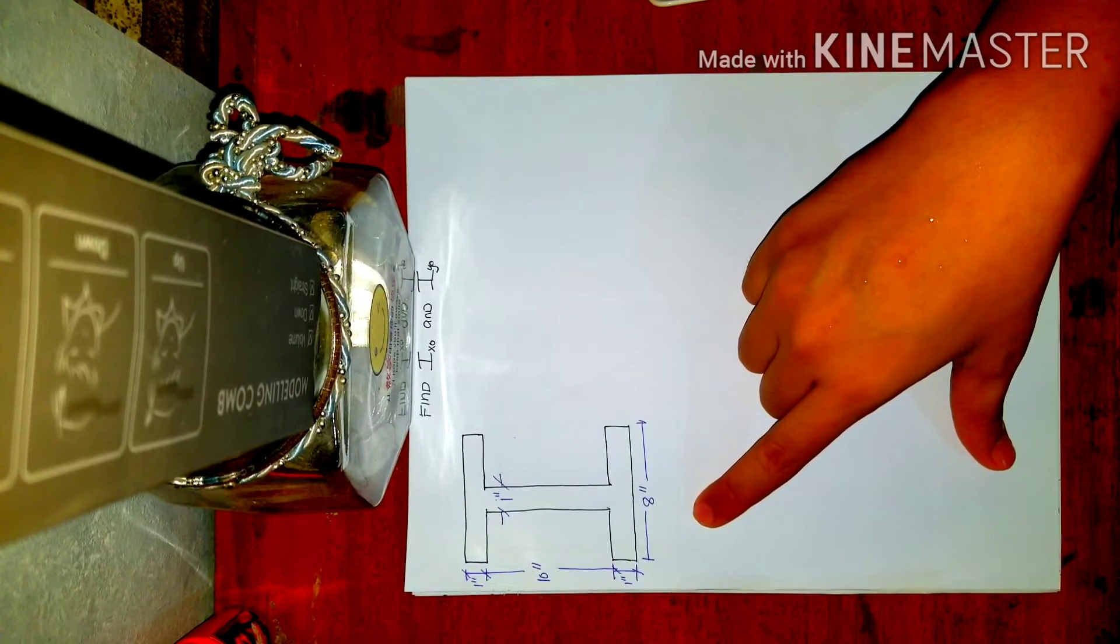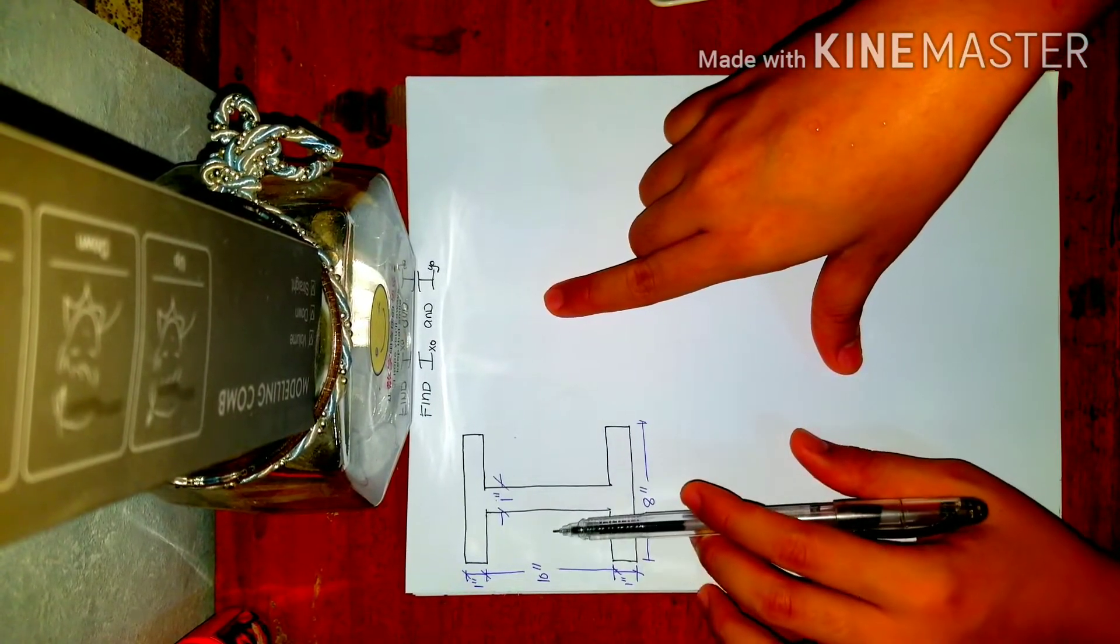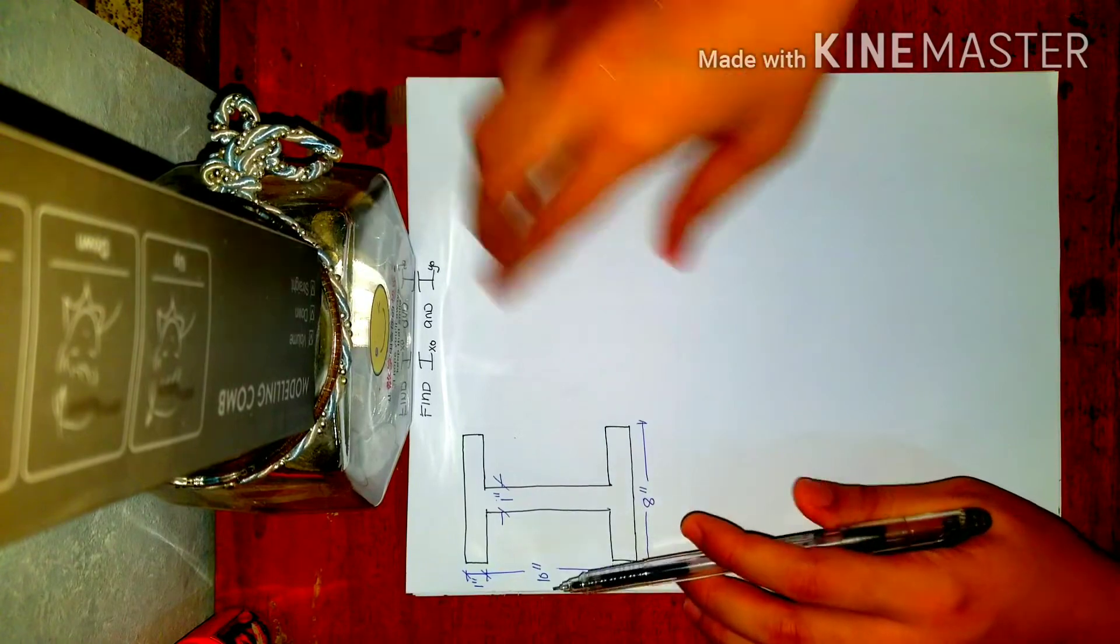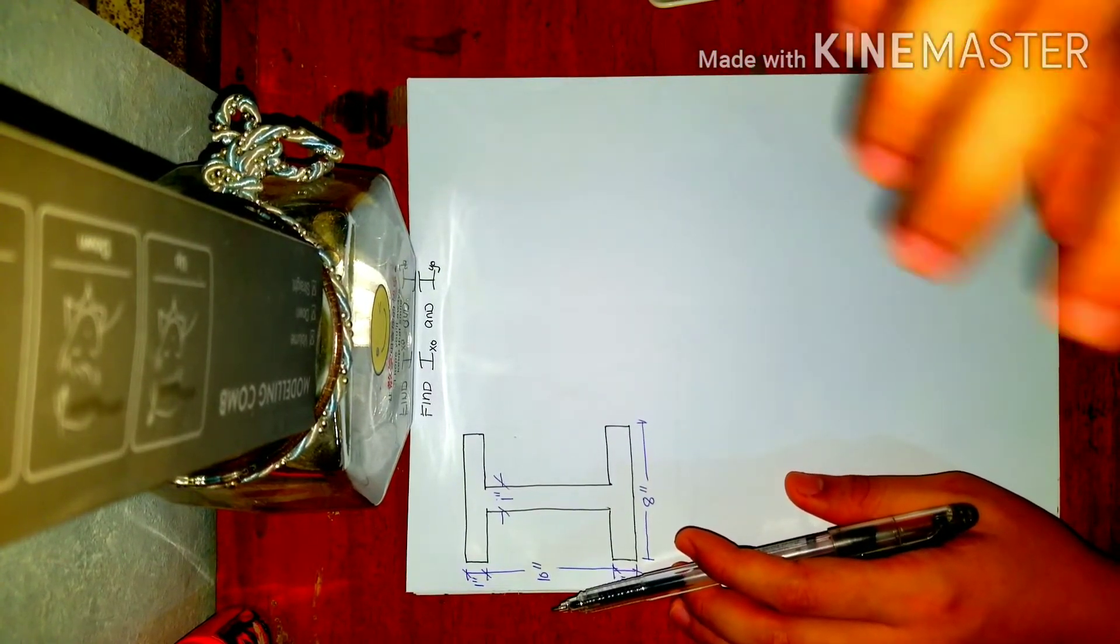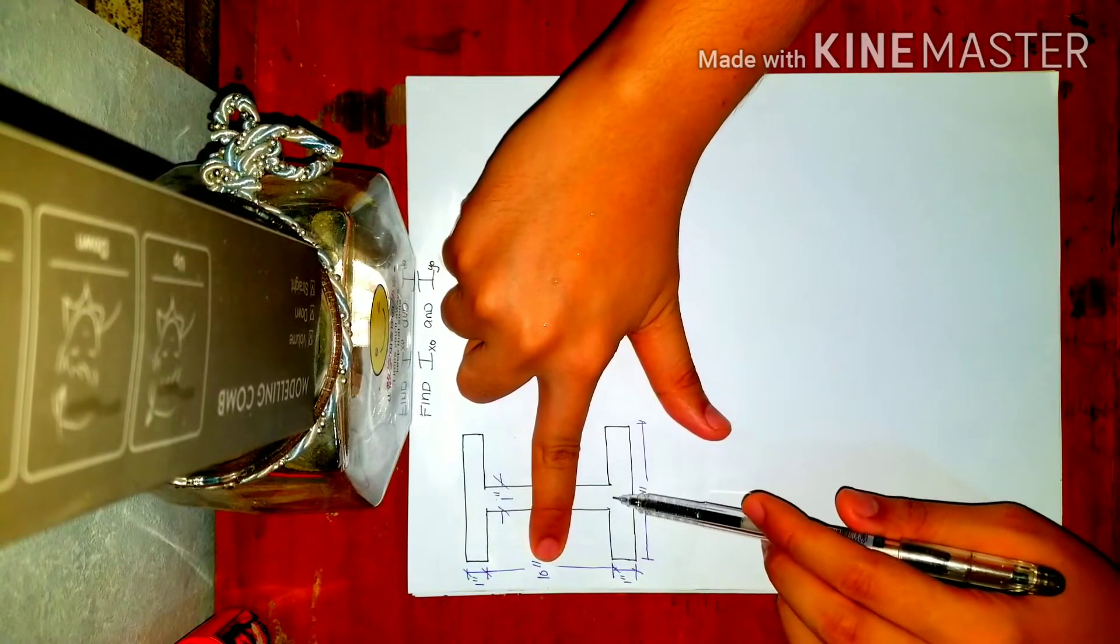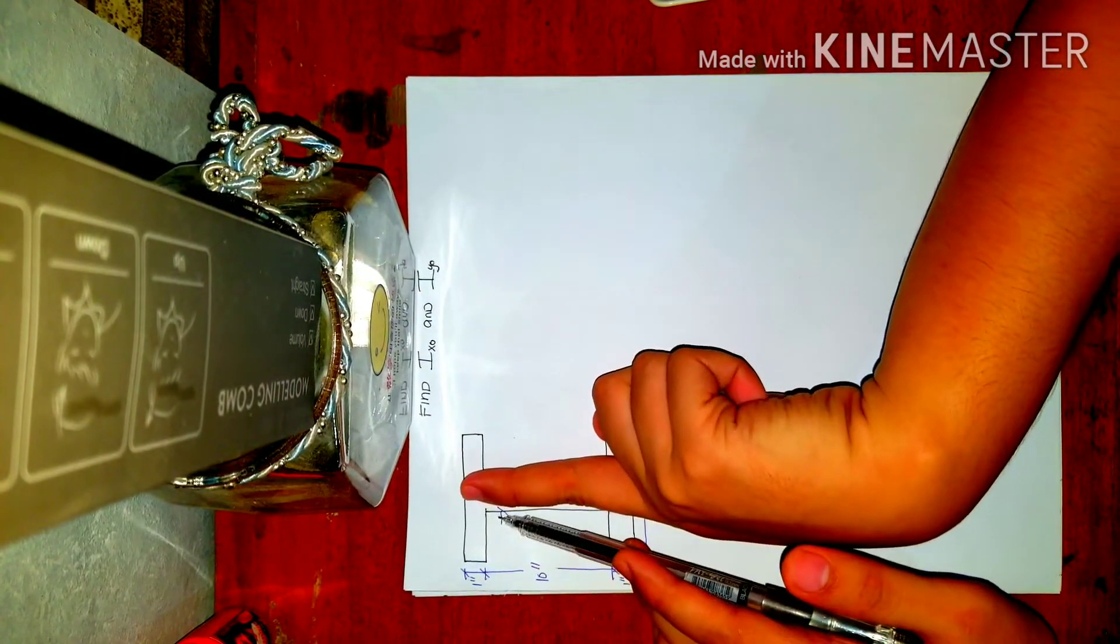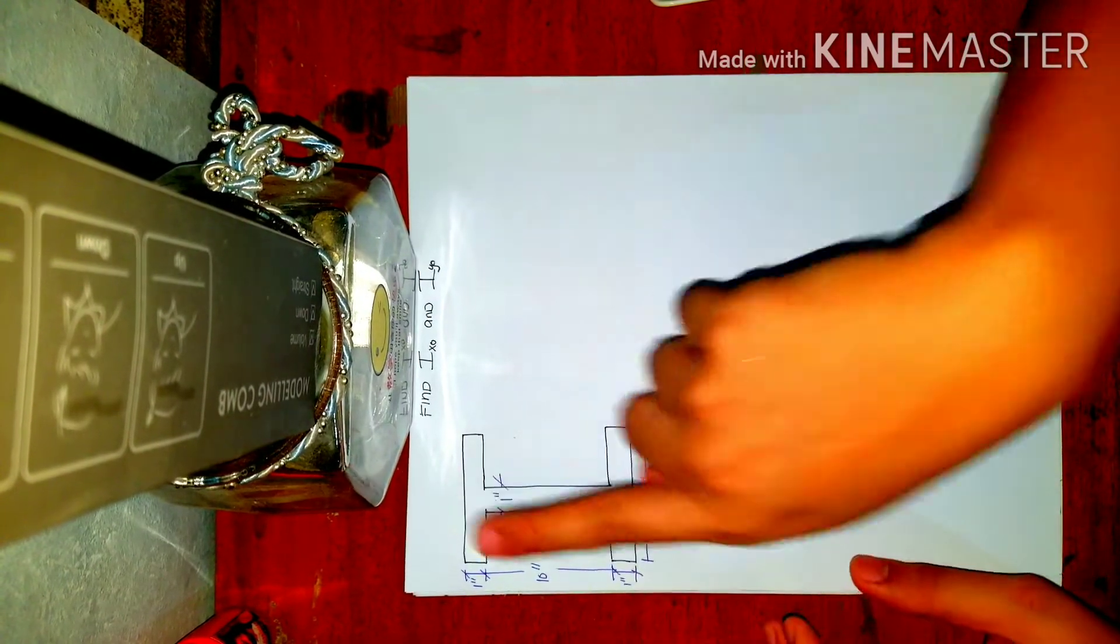So this composite section falls under the category of symmetrical. When we say symmetrical, if you fold it in half, whatever you see on top will be the same as what you see at the bottom. Or if you cut it in the middle, what you see on the left will be the same on the right.